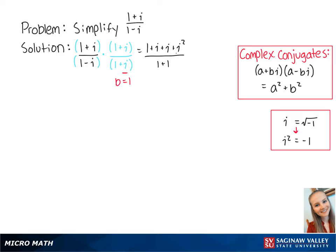Since i squared always equals negative 1, i squared in our quotient is equal to negative 1.